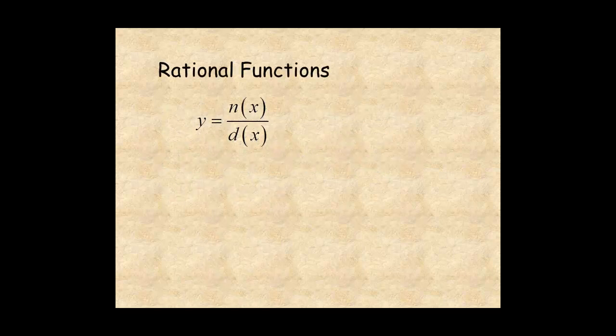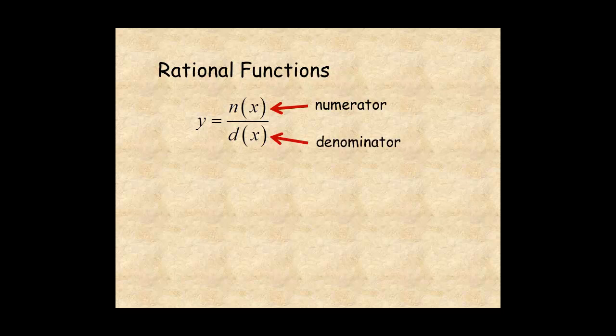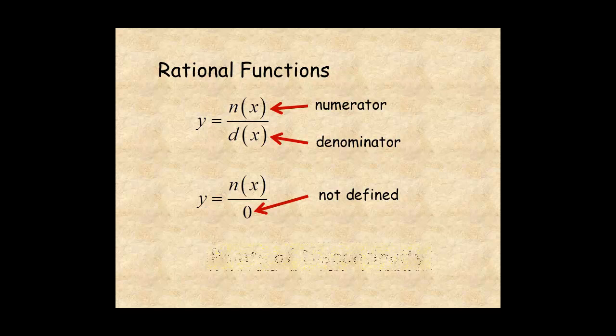A rational function is a ratio of polynomials where n of x is the numerator polynomial and d of x is the denominator polynomial. Since division by 0 isn't defined in algebra, any value of the variable that makes the denominator 0 is a place where the function is not defined. These are called points of discontinuity.